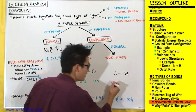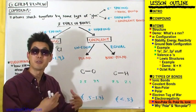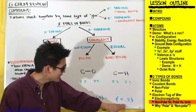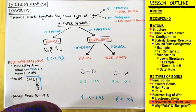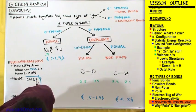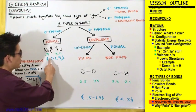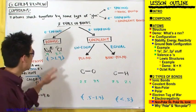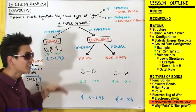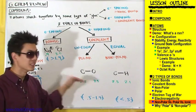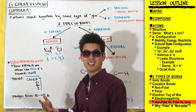For carbon and hydrogen: carbon is 2.5 and hydrogen is 2.1, giving a difference of 0.4 — less than 0.5, so that's a non-polar covalent bond. For sodium and chlorine: sodium is around 0.9 and chlorine is 3.0, giving a difference of 2.1 — greater than 1.9, so that's an ionic bond. You don't have to memorize these electronegativities; if your instructor asks you to classify a bond, they'll provide the values.